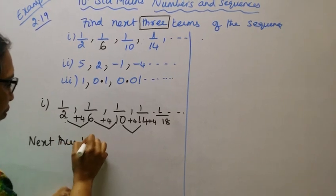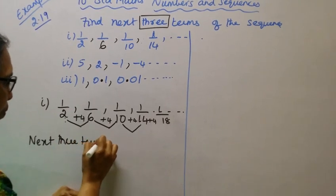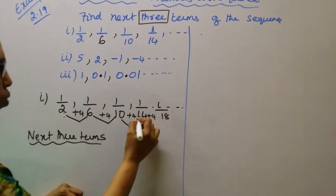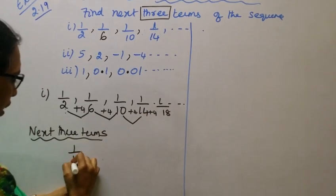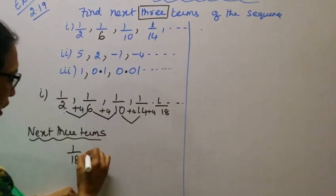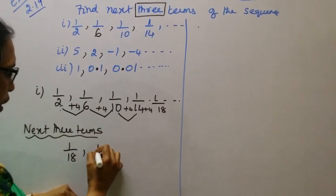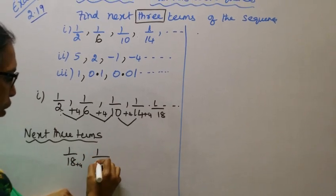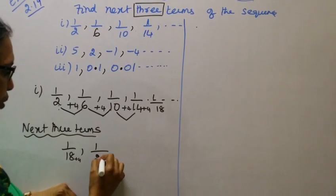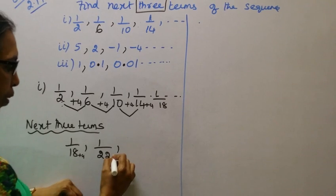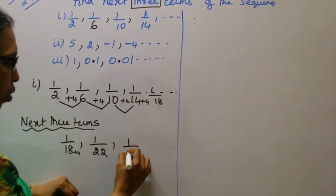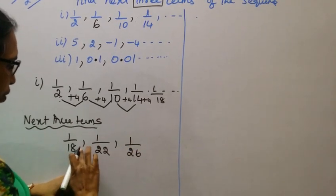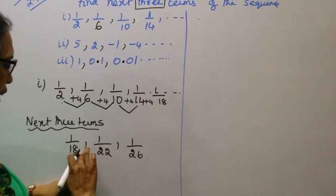Easy. The next 3 terms are: 1/18, then 18 plus 4 gives 1/22, then 22 plus 4 gives 1/26. This is the answer.